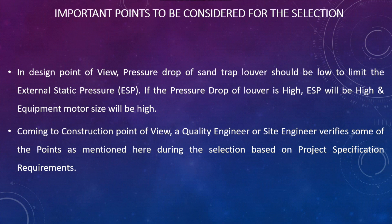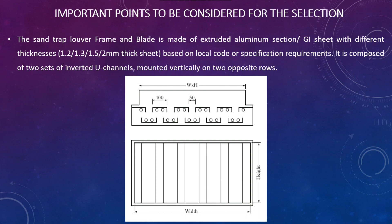Coming to the construction point of view, a quality engineer or site engineer verifies some of the points as mentioned here during the selection, based on the project specification. The sand trap louver frame and blade is made of extruded aluminum section or GI sheet with different thicknesses like 1.2, 1.3, 1.5, or 2mm thick sheet, based on the local code or specification requirement.